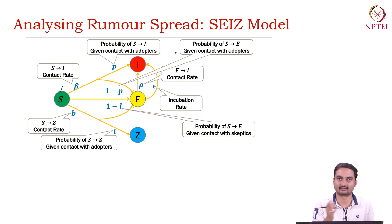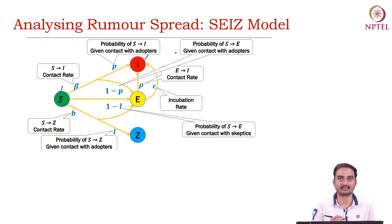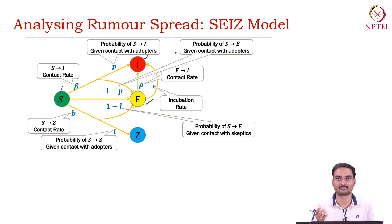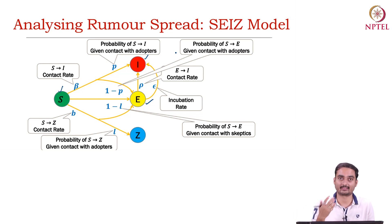The first state is susceptible — same as the previous model, but in the context of Twitter, susceptible users are all the Twitter users. The second state is infected — these are Twitter users who started believing in or spreading a particular rumour. There is another state called exposed: these are users who are already exposed to the news. For example, if I post a rumour, all my followers will be exposed to that particular post — my tweet will be visible on their Twitter feed, so they are exposed.